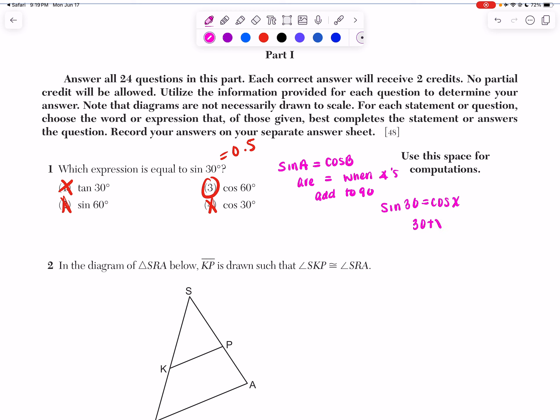So I can say 30 plus X is equal to 90. Subtract 30 from both sides of my equation. And then boom, you get X is equal to 60. So that is why it's choice number three.